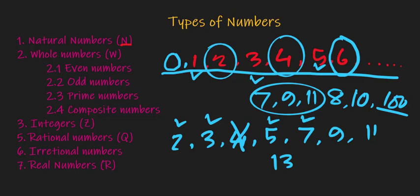9 is divided by 1, 3 and 9, so 9 is not a prime number. 11 is divided by 1 and 11 itself, so 11 is a prime number. 13 is divided by 1 and itself only, so 13 is also a prime number.